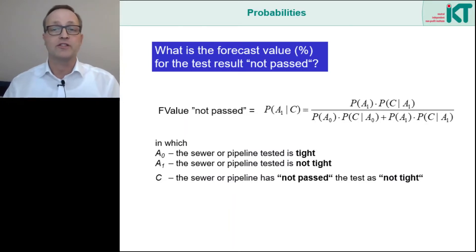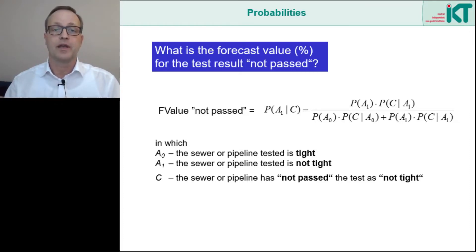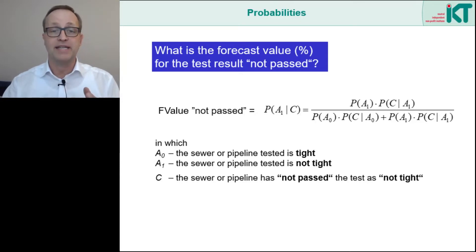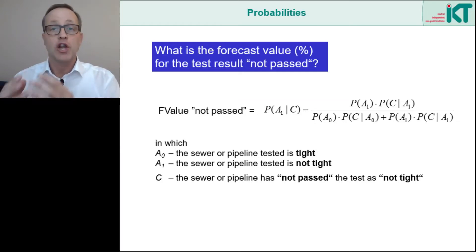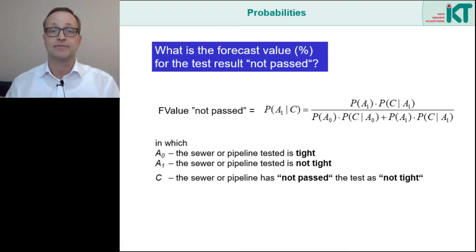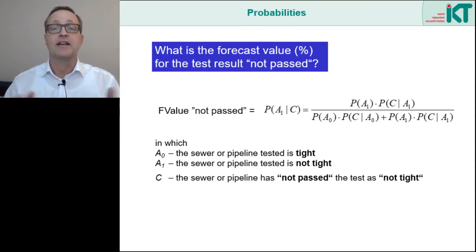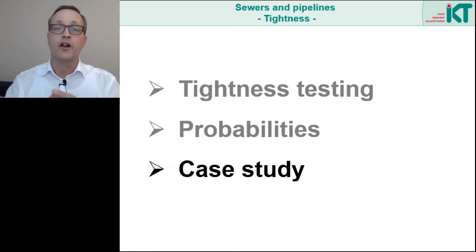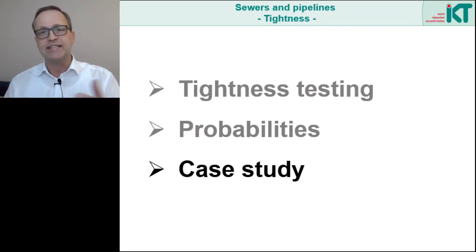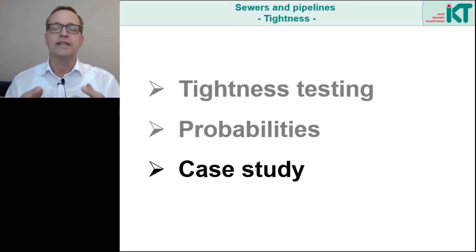Here we see the equation and everything we need to know — or at least estimate — so that we can calculate the whole thing. We can calculate if we know three things: first, the probability that the sewer or pipeline tested is tight; second, the probability that it is not tight; and third, the probability that the sewer or pipeline does not pass the test. For non-mathematicians, I have added a case study that helps us to better understand how we deal with this in practice.